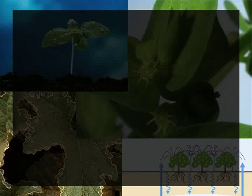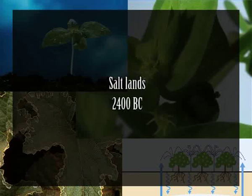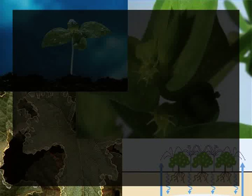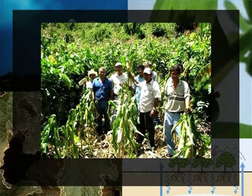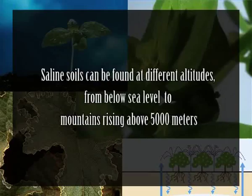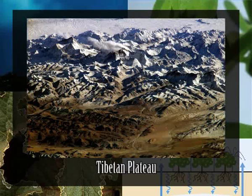Welcome students. Today we are going to discuss morphological, anatomical, and physiological responses of plants to salinity. The earliest written account of salt lands dates back to 2400 BC and was recorded in the Tigris-Euphrates alluvial plains of Iraq. Salt-affected lands occur in practically all climatic regions from the humid tropics to the polar regions. Saline soils can be found at different altitudes, from below sea level — for example around the Dead Sea — to mountains rising above 5,000 meters, such as the Tibetan Plateau or the Rocky Mountains.